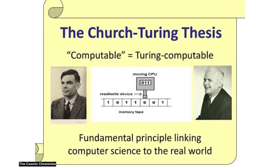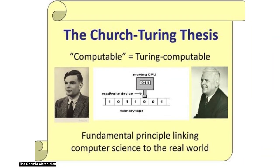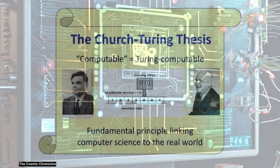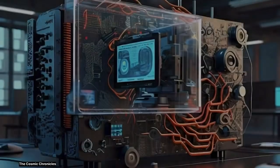Although widely accepted, the Church-Turing thesis is not a formal theorem that can be proven; rather, it is a hypothesis about the nature of computation.